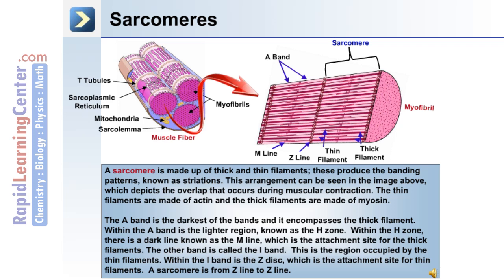The thin filaments are made up of actin, and the thick filaments are made up of myosin. The A-band is the darkest of the bands and encompasses the thick filament. Within the A-band, the lighter region is known as the H-zone. Within the H-zone there is a dark line known as the M-line, which is the attachment site for the thick filaments. The other band is called the I-band, which is occupied by thin filaments. Within the I-band is the Z-disc, which is the attachment site for the thin filaments. A sarcomere spans from Z-line to Z-line.